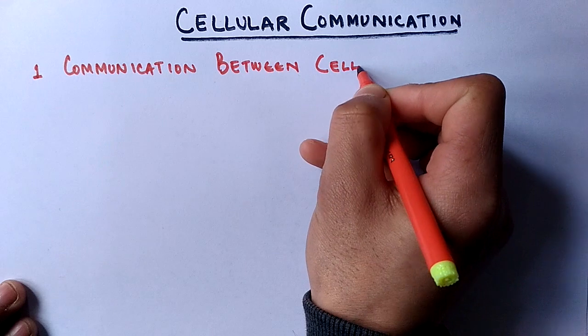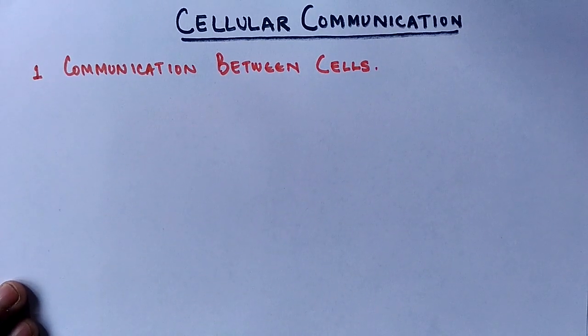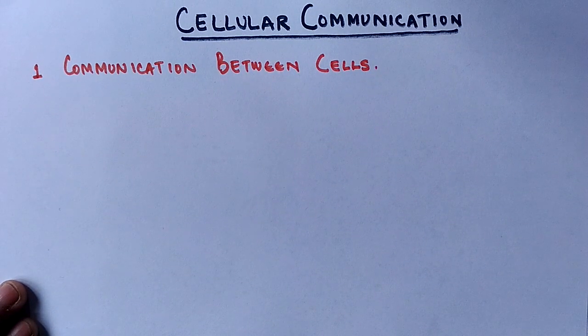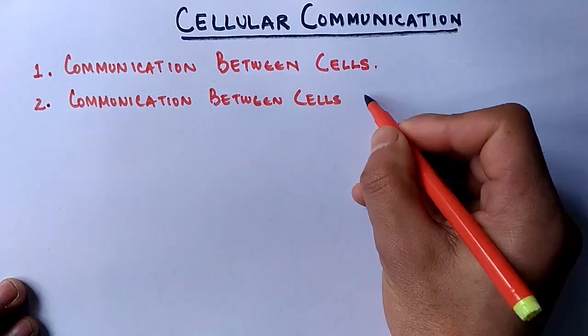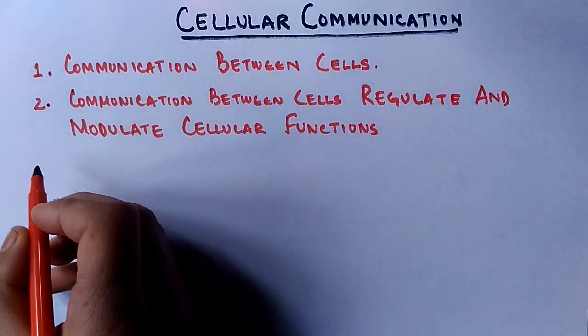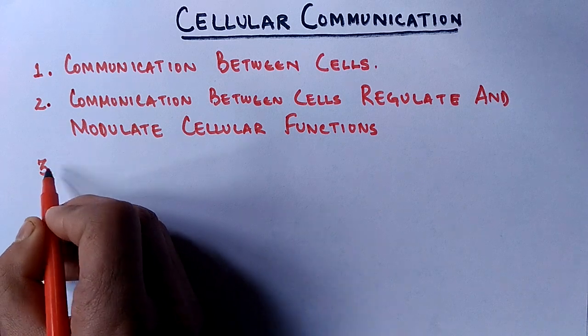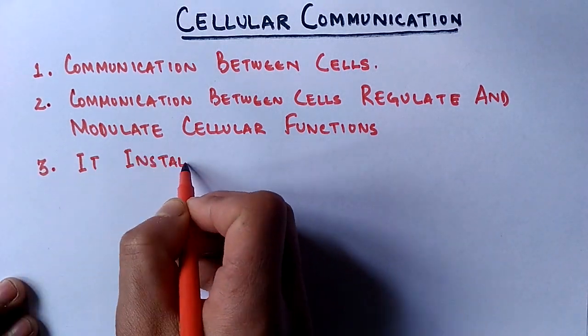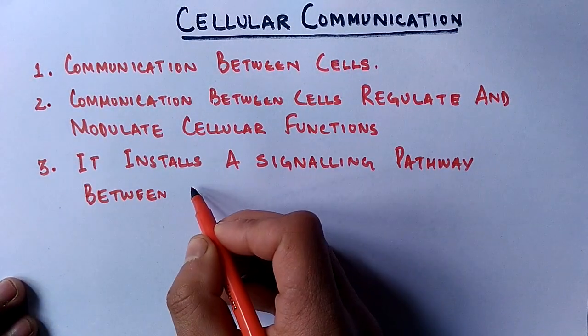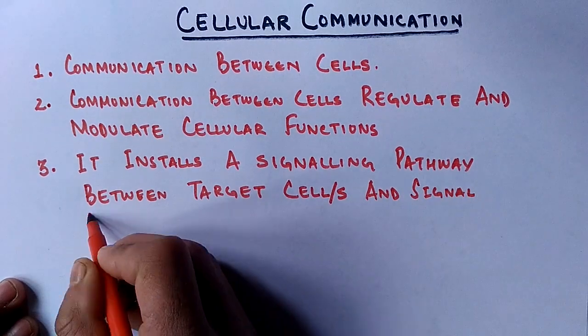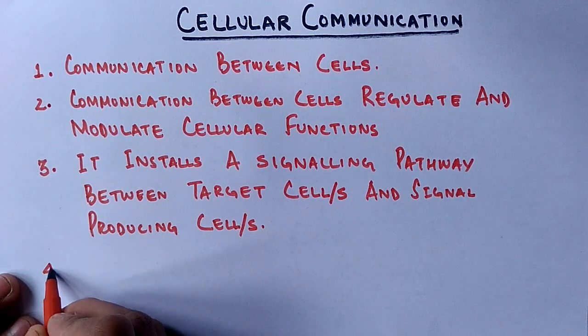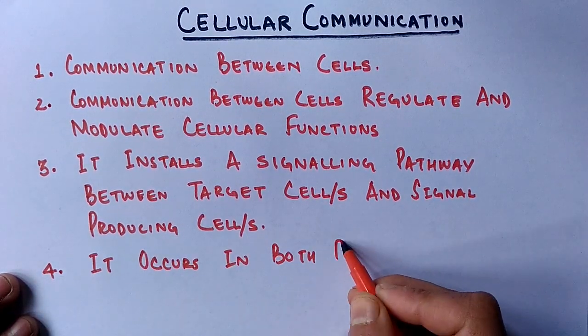This is communication between cells which directs the cells what to do and what not to do. Second, it regulates and modulates cellular functions in our body. Third important point is that it installs a signaling pathway between target cells and signal producing cells.